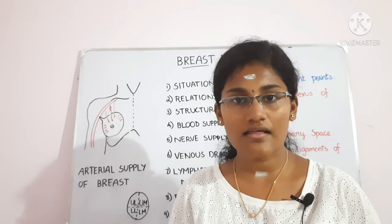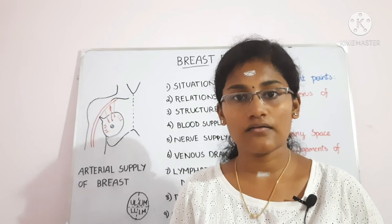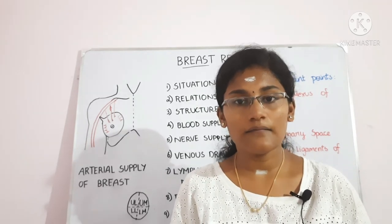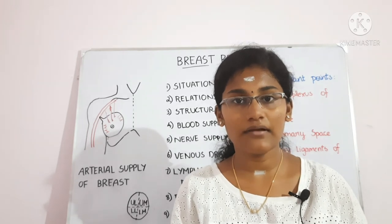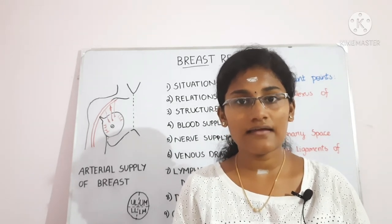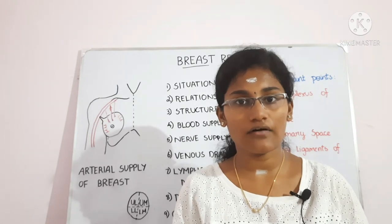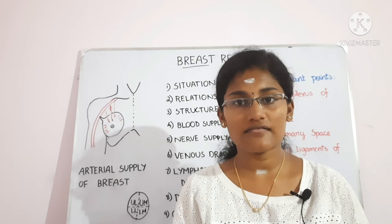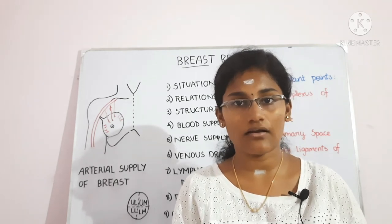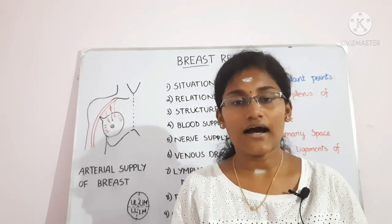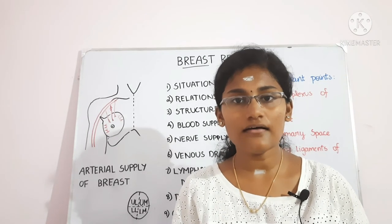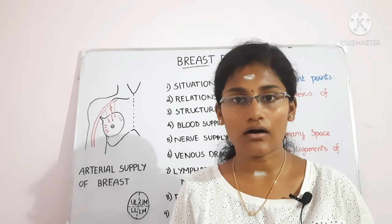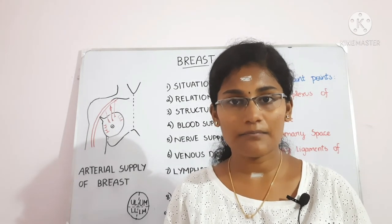Other breast-related conditions include: supernumerary nipple (polythelia), where more than one nipple develops along the milk ridge and is often mistaken for moles; polymastia, the development of more than one breast along the milk ridge; and gynecomastia, where breast tissue develops in males due to hormonal imbalance.